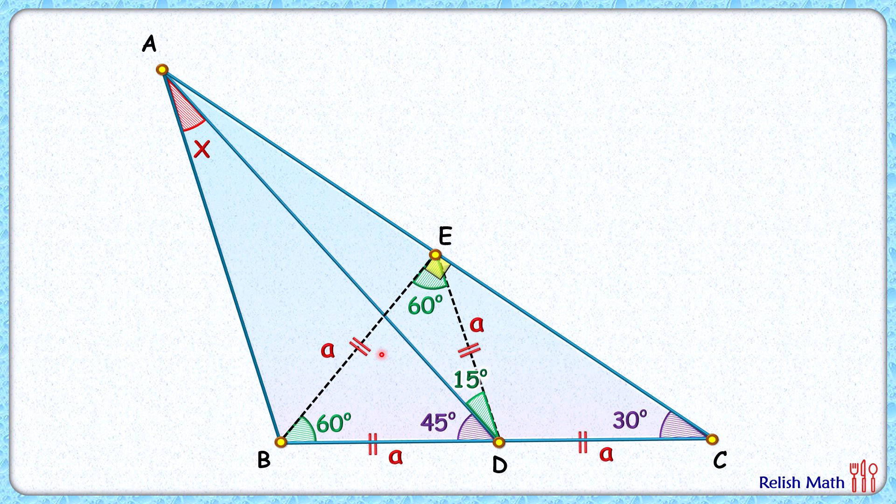Now if you look at this yellow triangle here, angle 45 degrees is an exterior angle, so it will be equal to the sum of interior opposite angles. So if this angle here is 30 degrees, then this angle here will be 15 degrees.